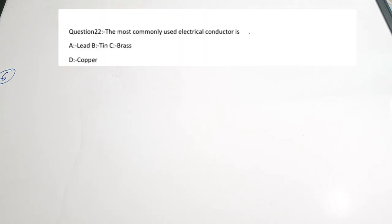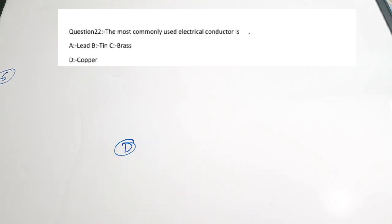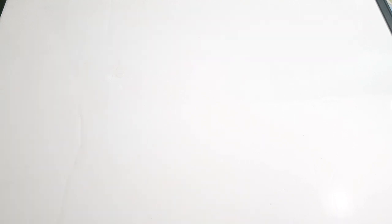The sixth question: the most commonly used electrical conductor is — dash. Options: A) lead, B) tin, C) brass, D) copper. We are all familiar with the copper wires used in cables and wires — inside these wires we have copper. The correct answer is option D: copper is the most commonly used electrical conducting material.